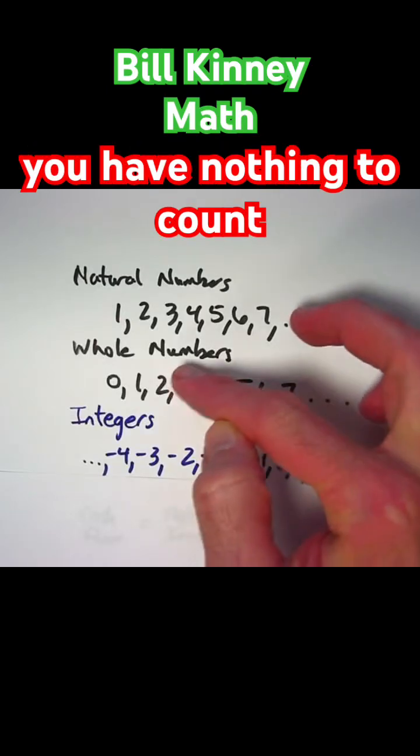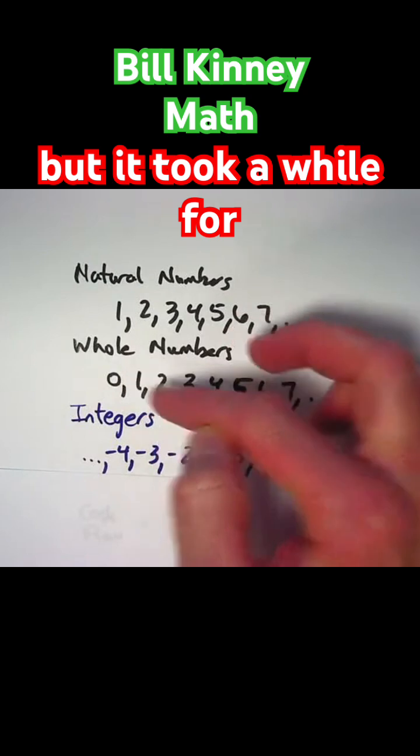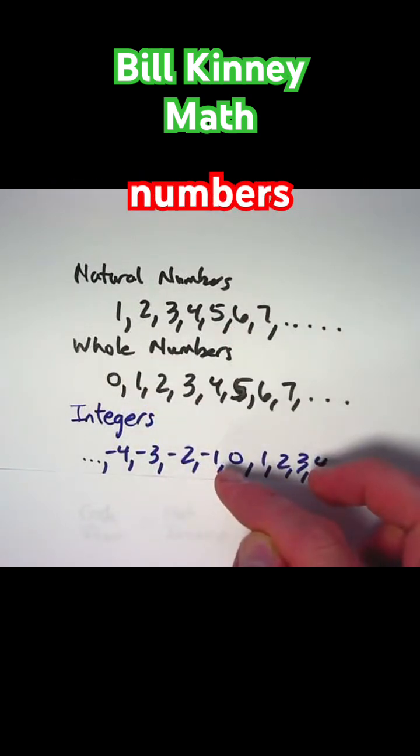But what do you do when you have nothing to count? Well, you can call that zero things, but it took a while for that to be accepted as a number. And negative numbers took a while to be